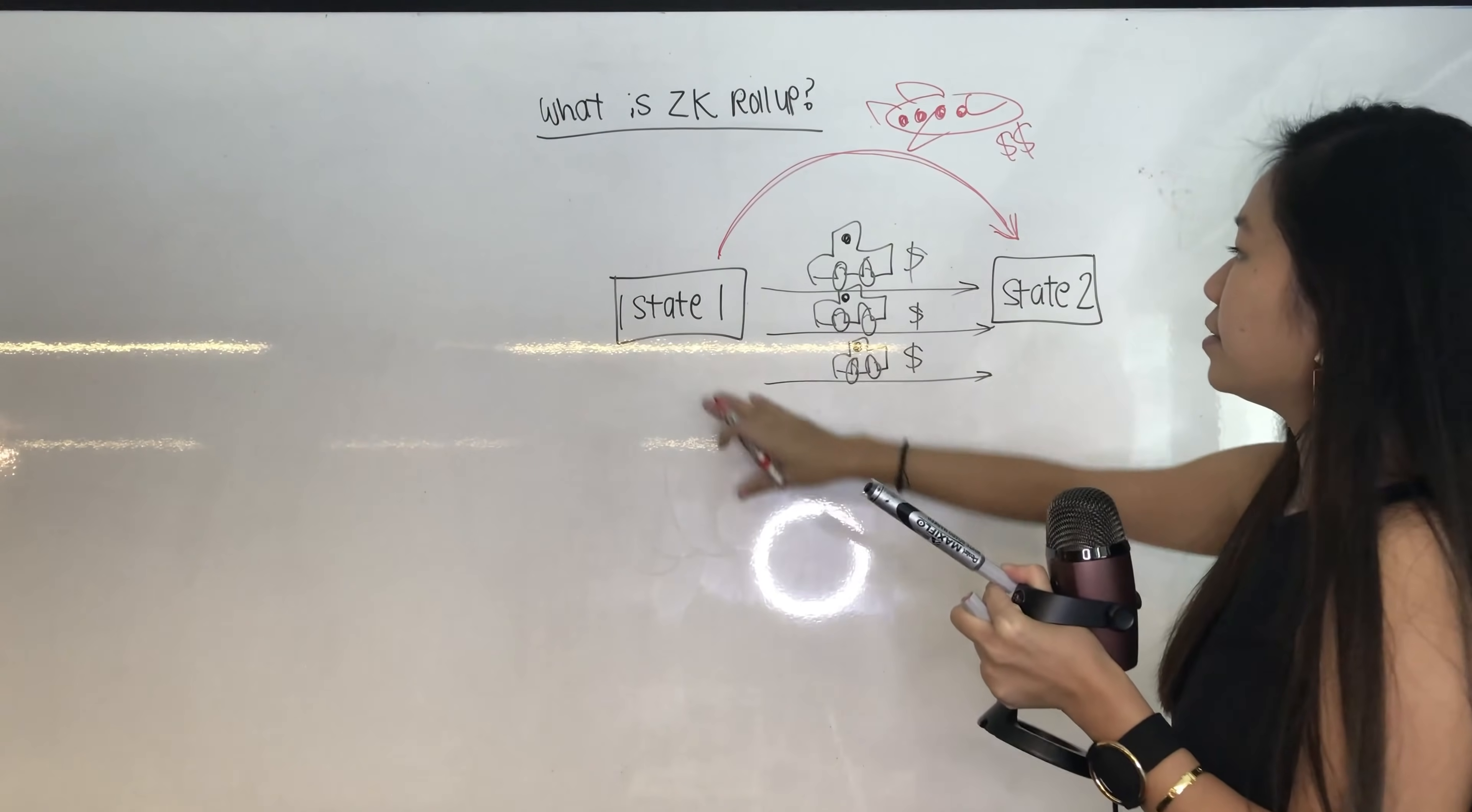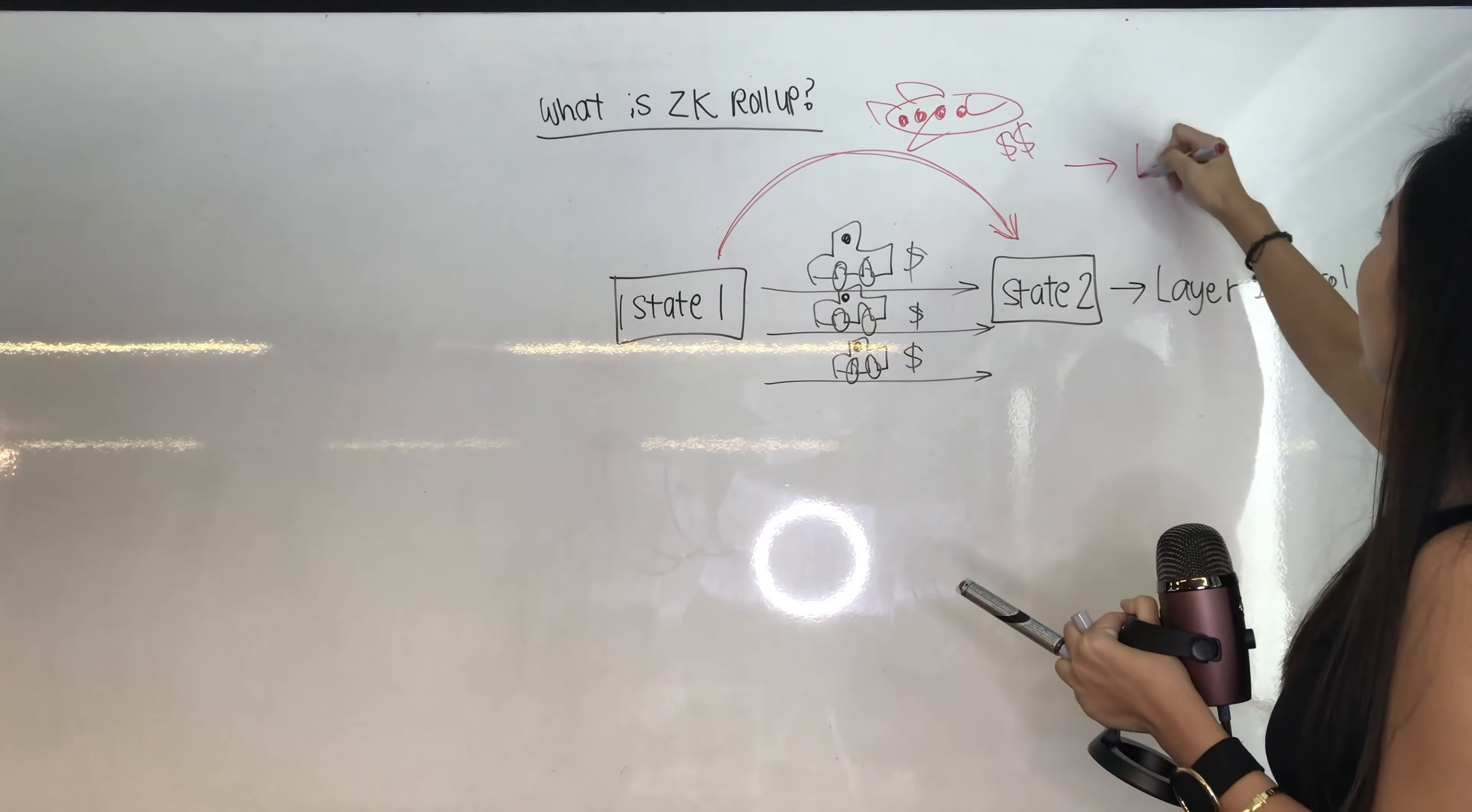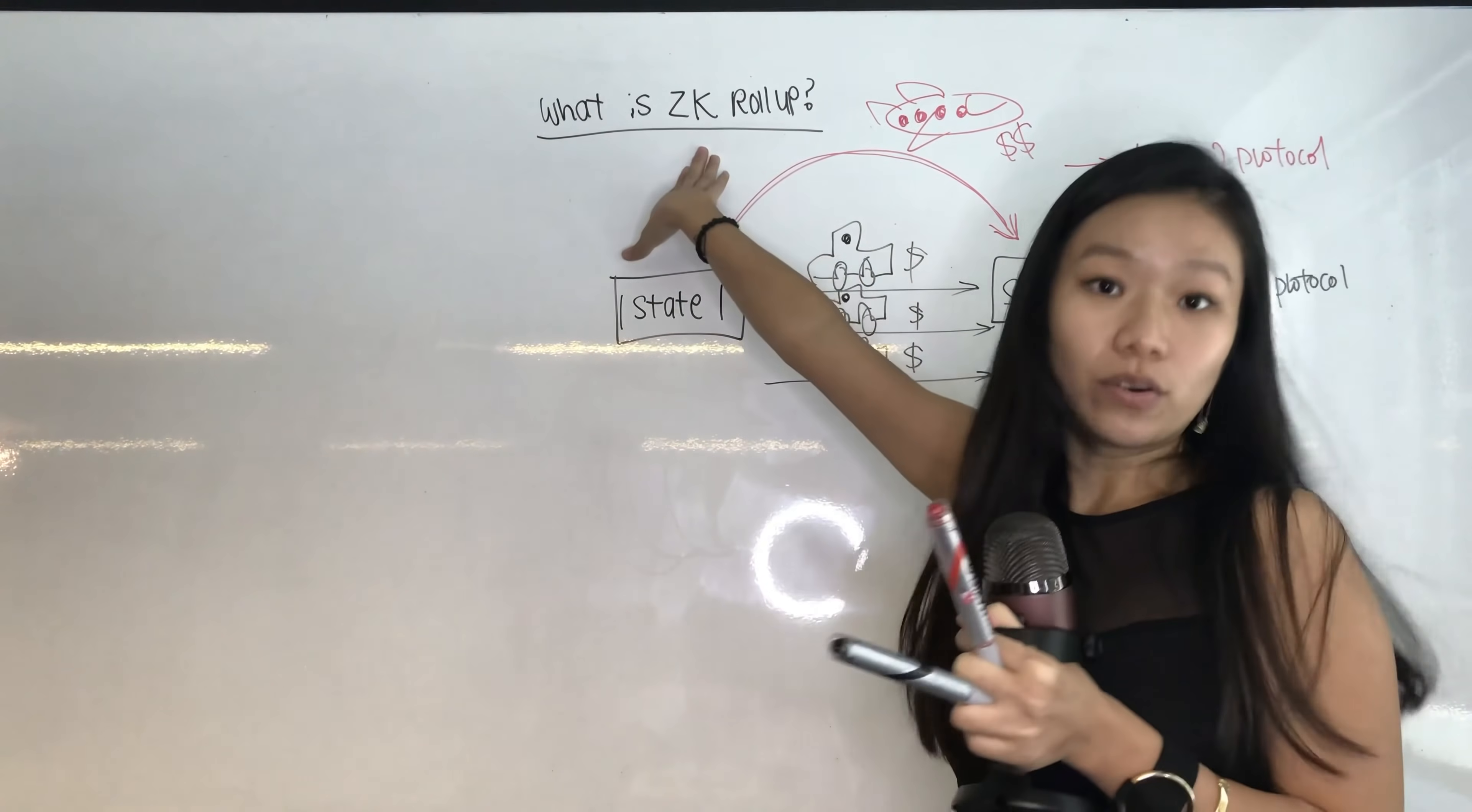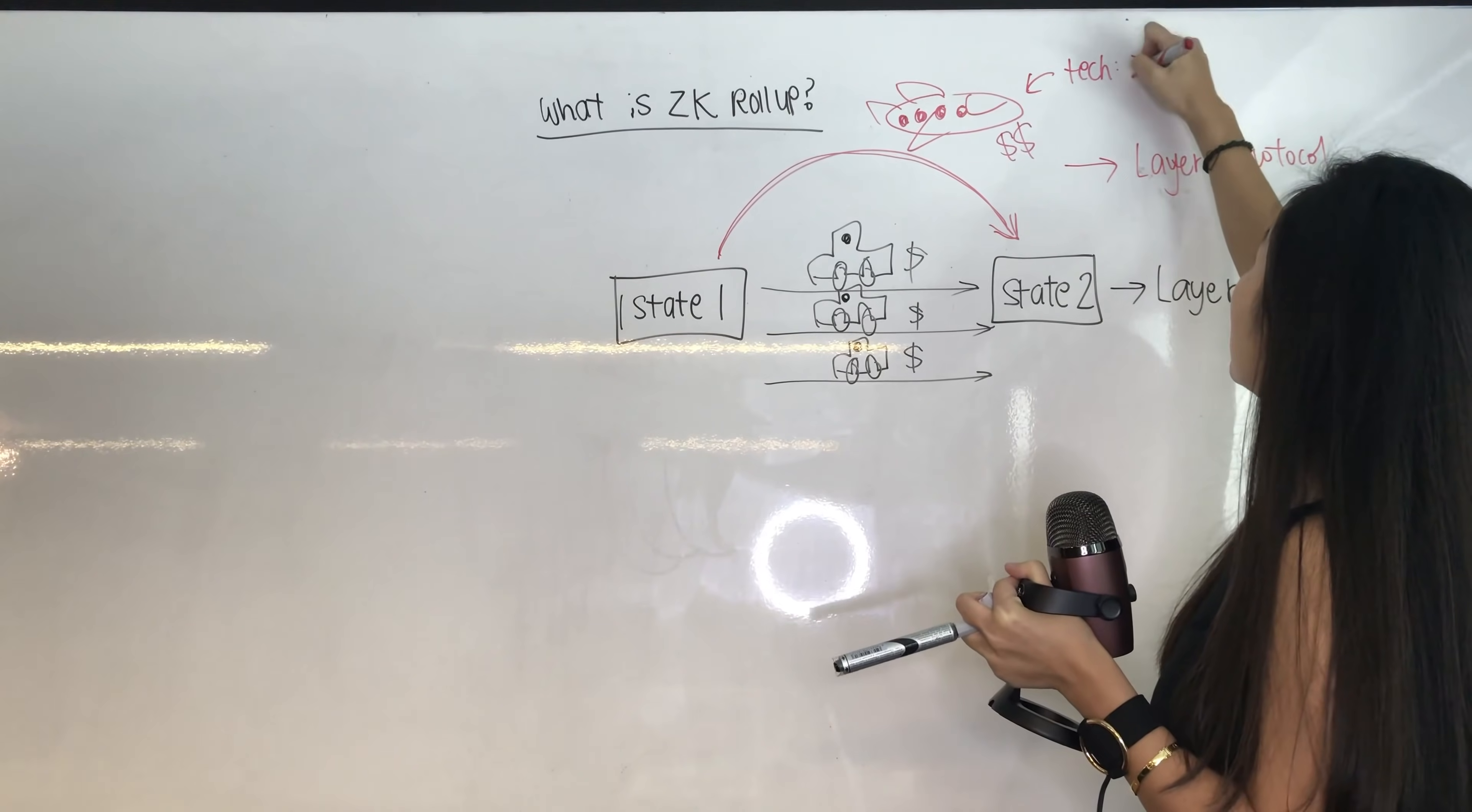And so this is basically the mechanism of scalability. And this black part that we see over here, this is your layer one protocol. And this red plane, this is your layer two protocol. And this is just the understanding of how these systems work. And now where does ZK rollup come in? It comes in this aspect. So the technology to aggregate these transactions to a plane and allow the plane to be sending the transactions to state two, this part, the tech application is called ZK rollup.